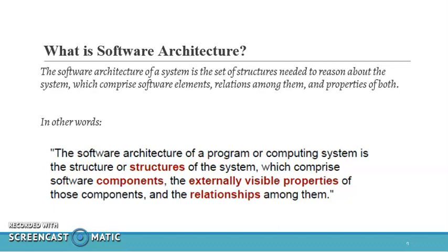Software architecture provides the fundamental design of the system. An architecture of the system describes its major components, their relationships, and how they interact with each other. This is the main thing a software architecture describes. So software architecture is a combination of structures.